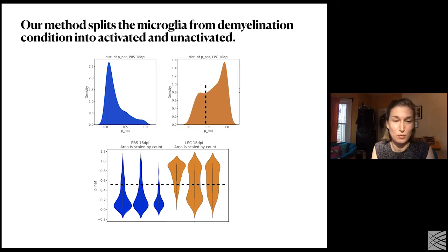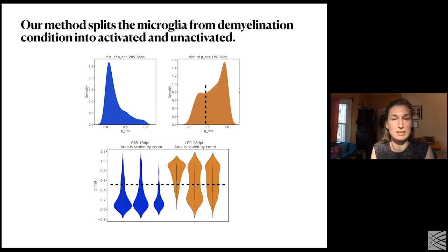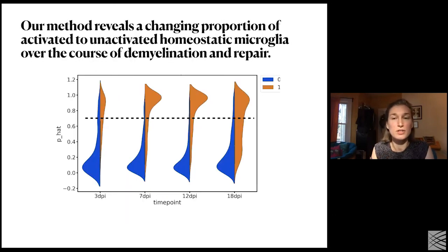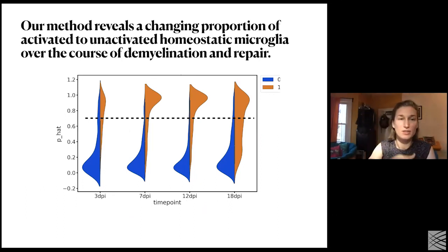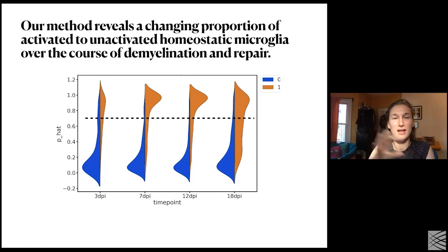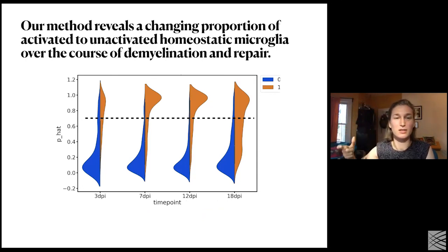The split is consistent across the three animal replicates of the two conditions. We find markers using differential expression of the different cells, and key markers for this population are consistent with microglial activation found in related studies. Zooming out to all four time points, our method allows us to notice a shifting proportion of activated to unactivated homeostatic microglia over the course of demyelination: at three days post-injection there is some activation, over the next few days that proportion increases, and as we get closer to the final time point of repair, the balance changes again favoring more unactivated cells.